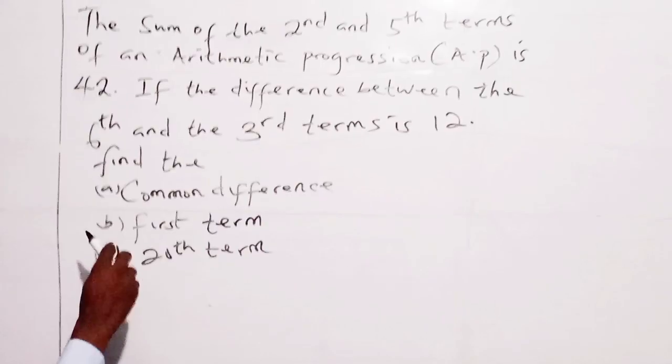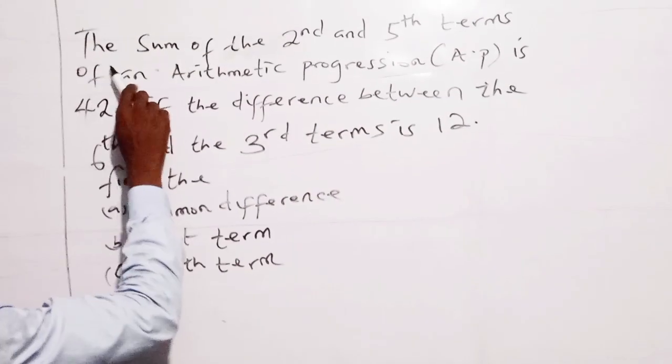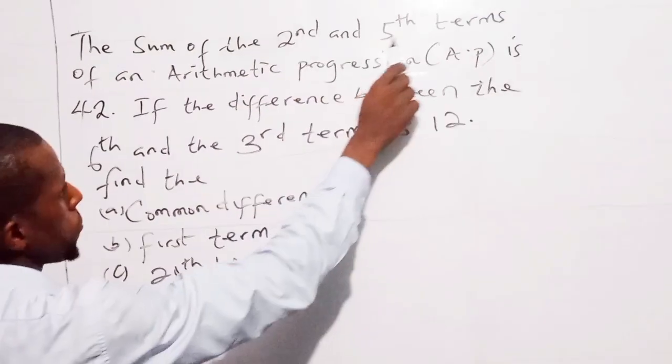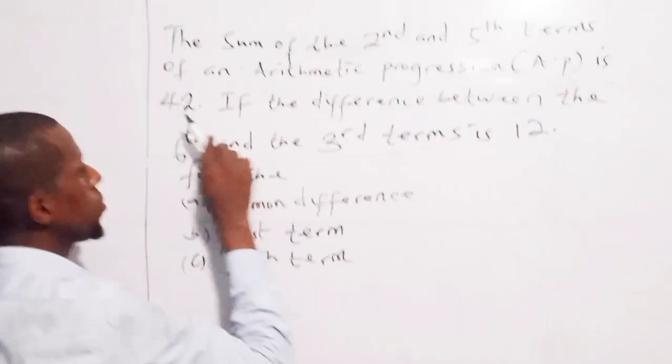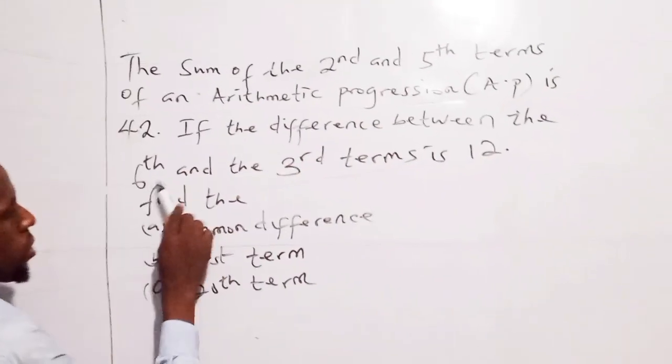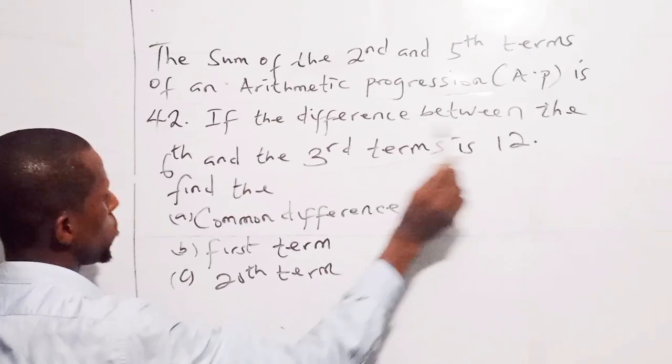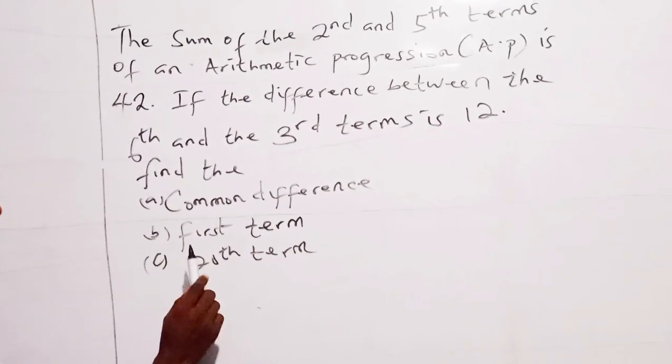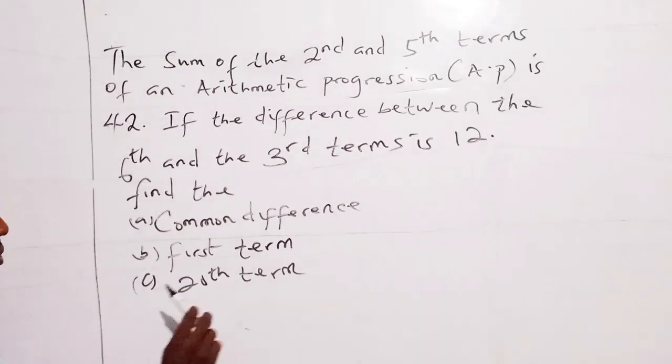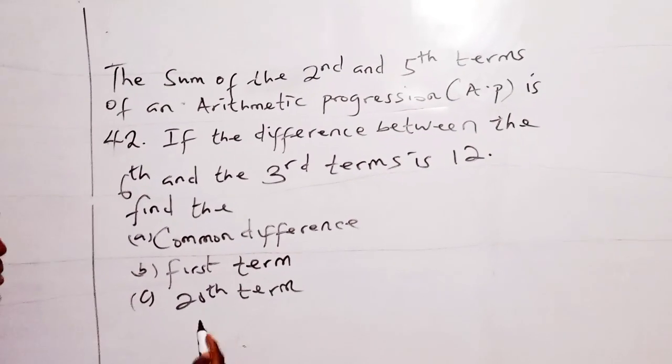Hi everyone. So we have a question on this. The sum of the second and fifth terms of an arithmetic progression AP is 42. If the difference between the sixth and the third term is 12, we are asked to find A the common difference, B the first term, C the 28th term.